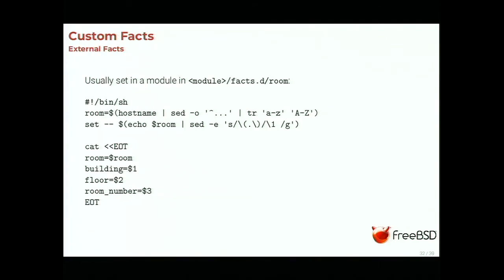A last way to add custom facts is using a newer mechanism that allows any scripting language or any program — presumably even an .exe on Windows — to output raw key-value pairs. Here's a short shell script snippet to gather the facts we talked about before.